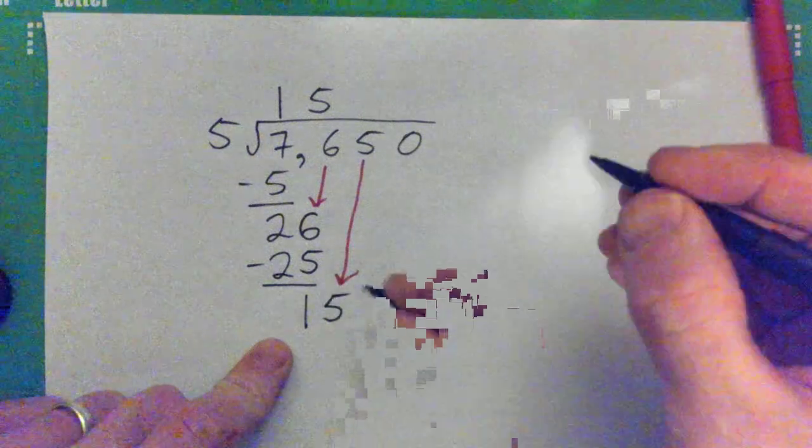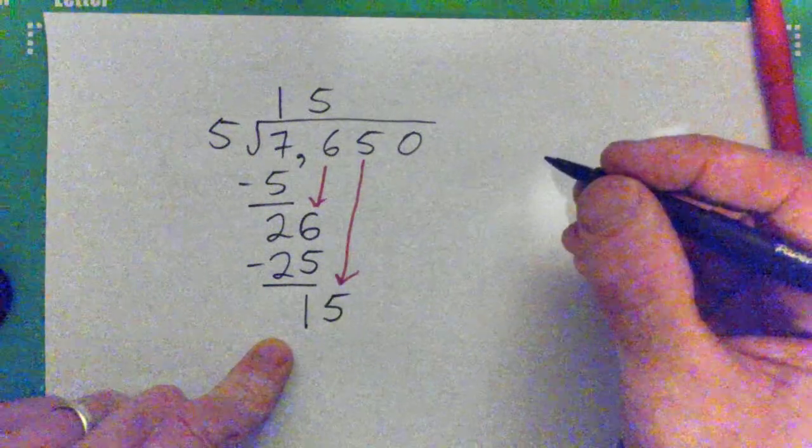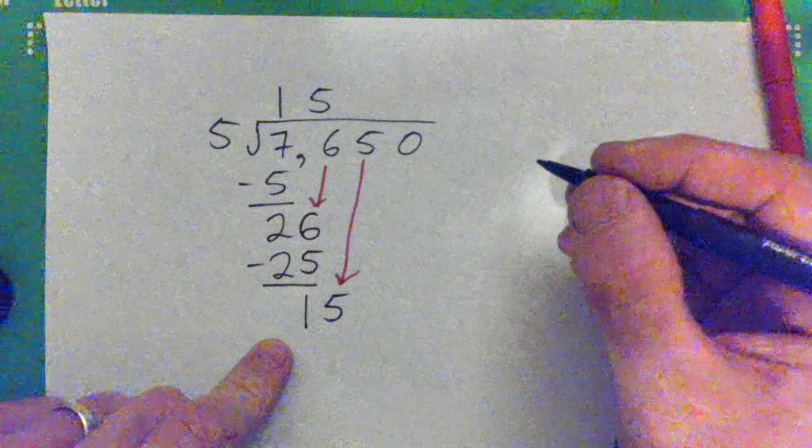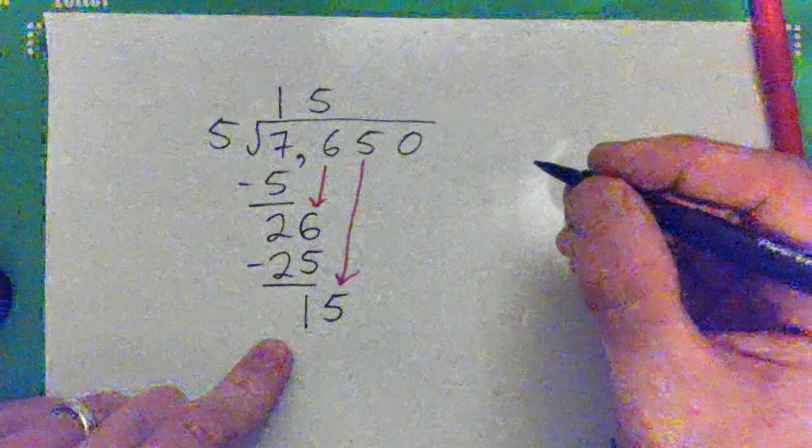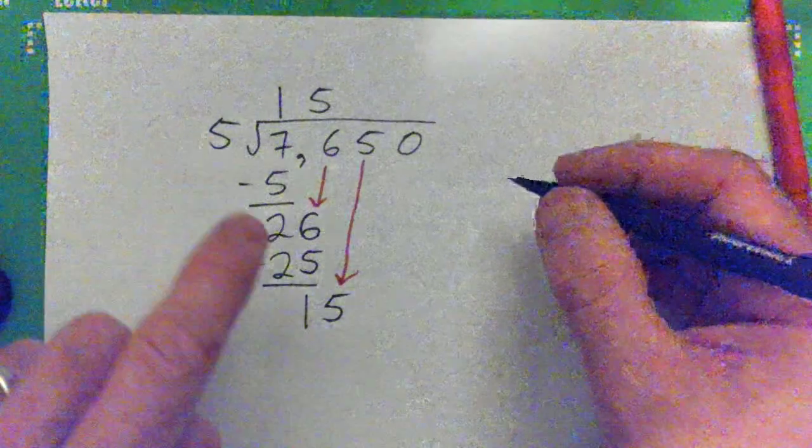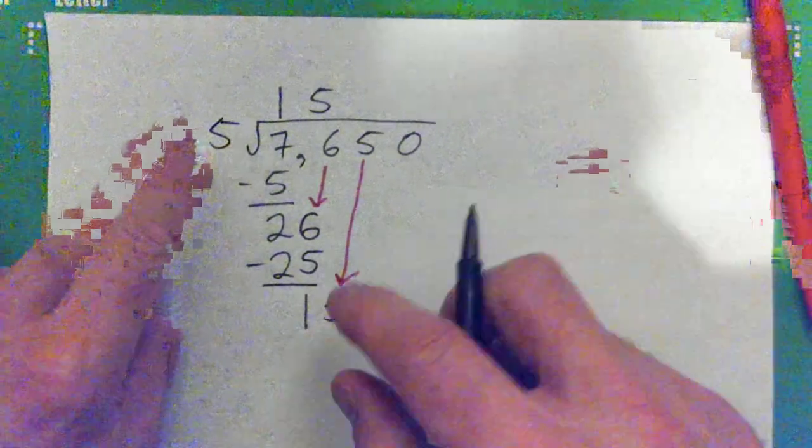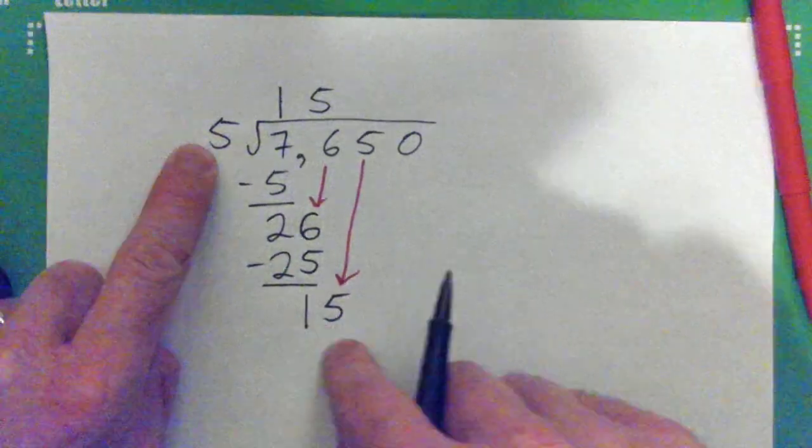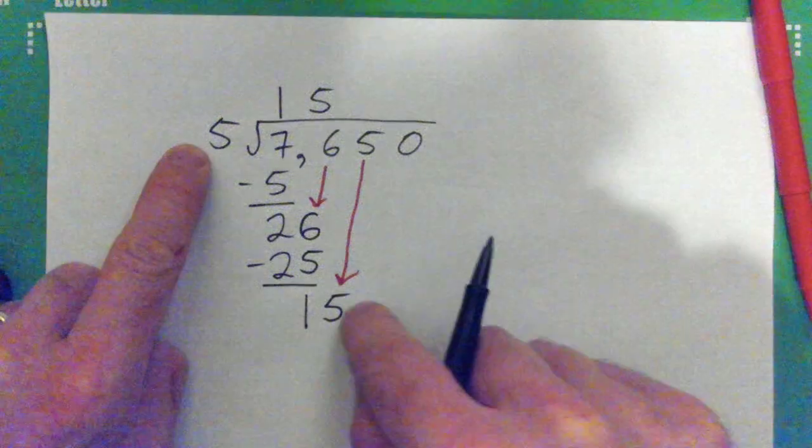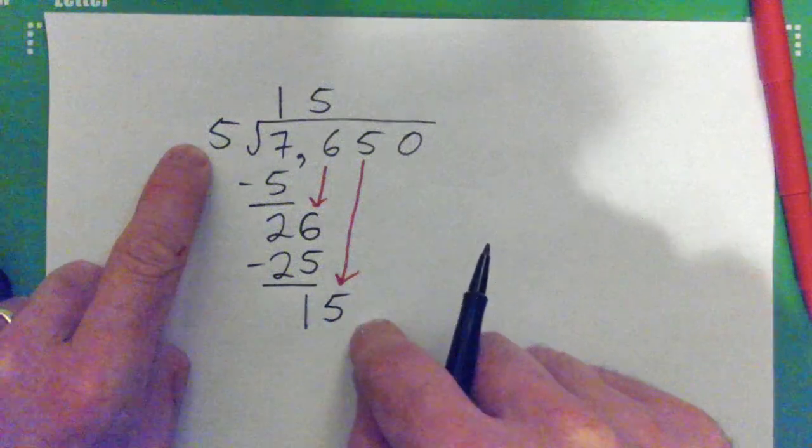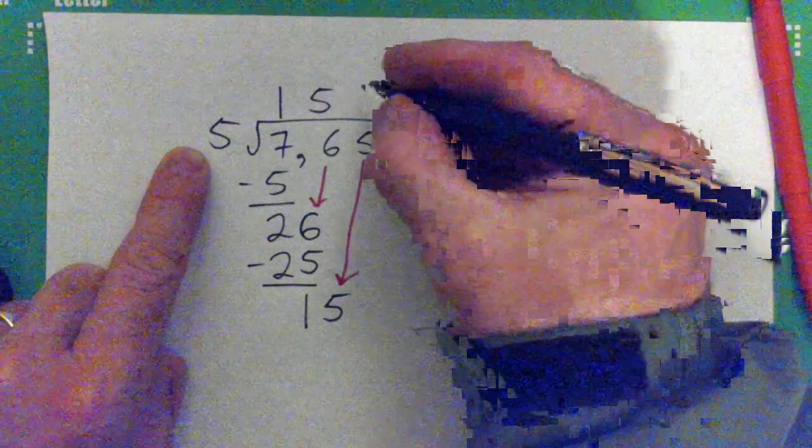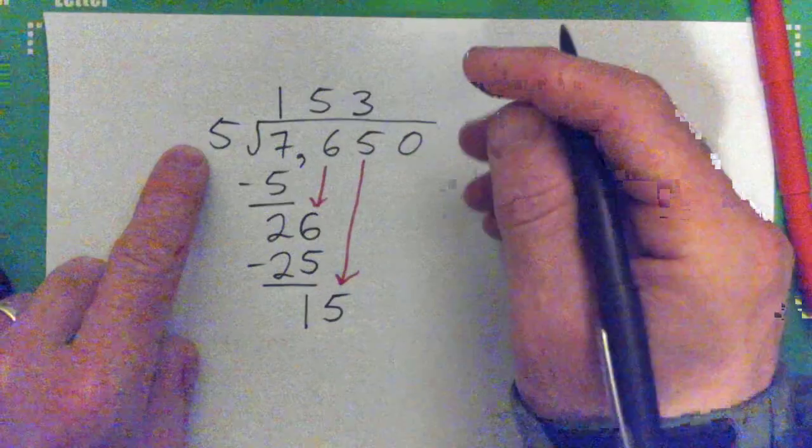Now what do you do next? Yes, you go five into 15. How many fives are contained inside of this? Three, put that up there, good. And now what?